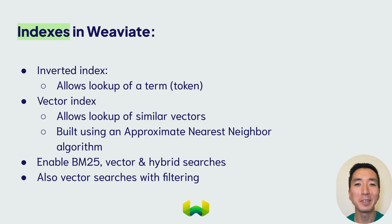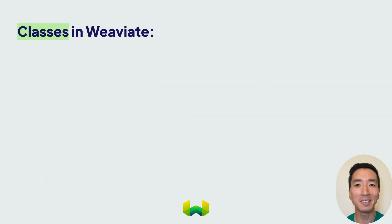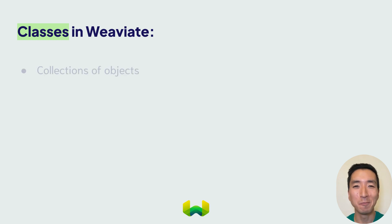So that was indexes, which is all about enabling you to find the right objects fast. Now let's discuss classes, which is all about how you structure your data objects in Weaviate. In Weaviate, collections of the same object types are called classes.